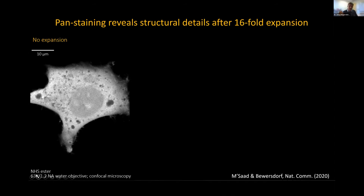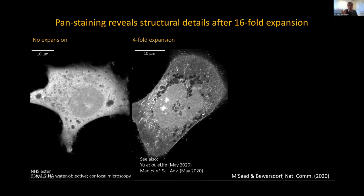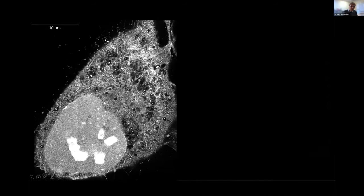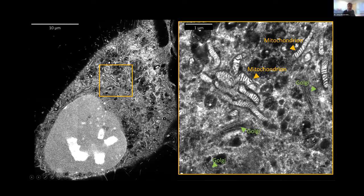Looking at the NHS ester pan-staining on a non-expanded cell, you see essentially the whole cell without much detail — NHS ester has been around for decades, which explains why we haven't used it much in fluorescence microscopy. However, if you apply this to a once- or twice-expanded sample, you start to see details previously obscured by resolution limits. Zooming into the 16-fold expanded sample, you can actually resolve the cristae of mitochondria, the stacking of the Golgi, and other ultrastructural features — just with a confocal microscope, with no optical super-resolution.